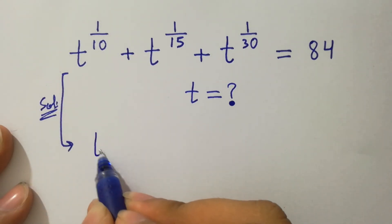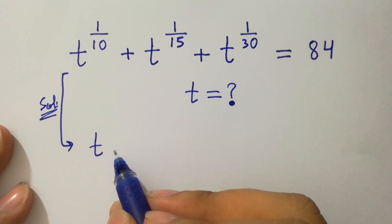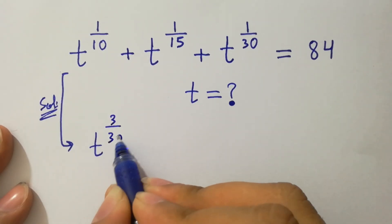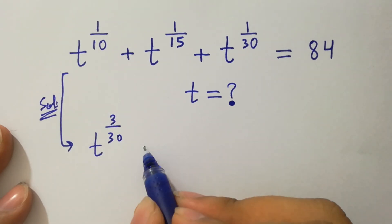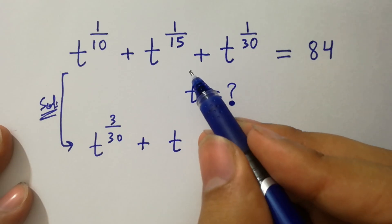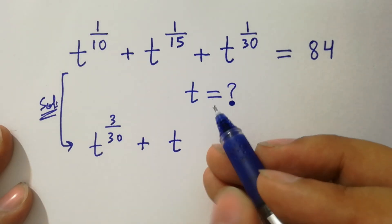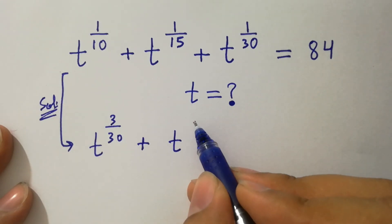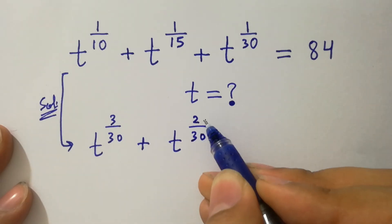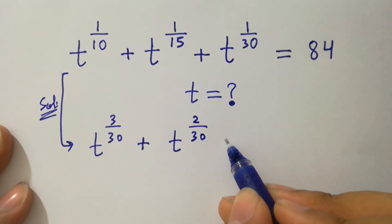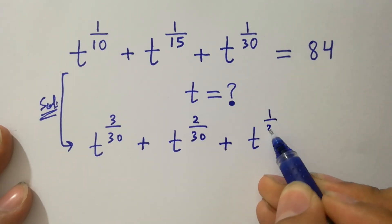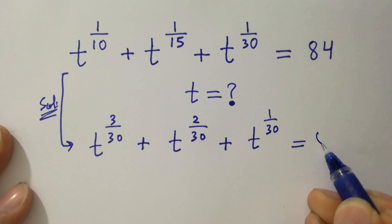Here 1 over 10 is the same as 3 over 30, and 1 over 15 is the same as 2 over 30. So we have t to the power 3 over 30 plus t to the power 2 over 30 plus t to the power 1 over 30 equal to 84.